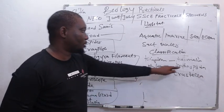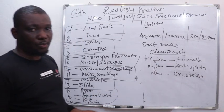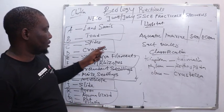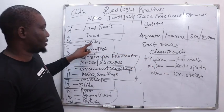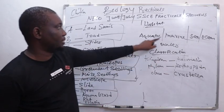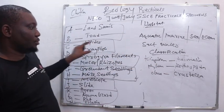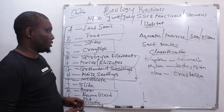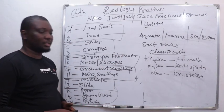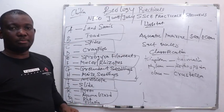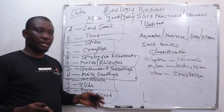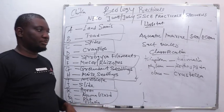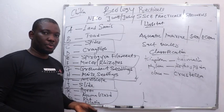Crustacea are arthropods that are mainly aquatic, but Arachnida are terrestrial. So looking at the habitat, one can now know the reason why the spider and crawfish belong to separate classes of the same phylum, the same kingdom.